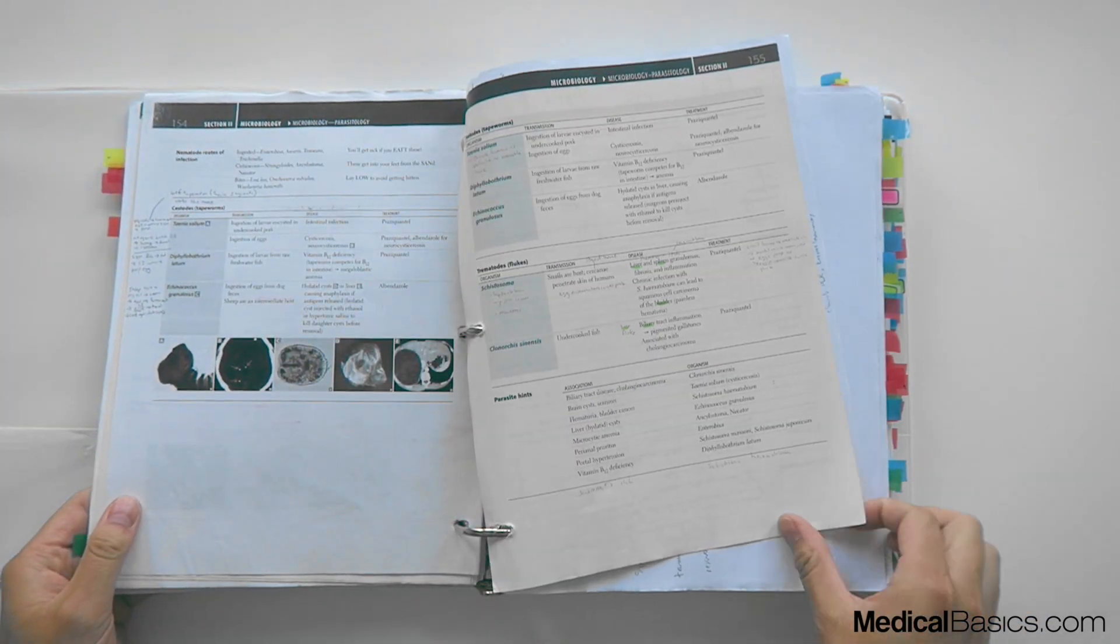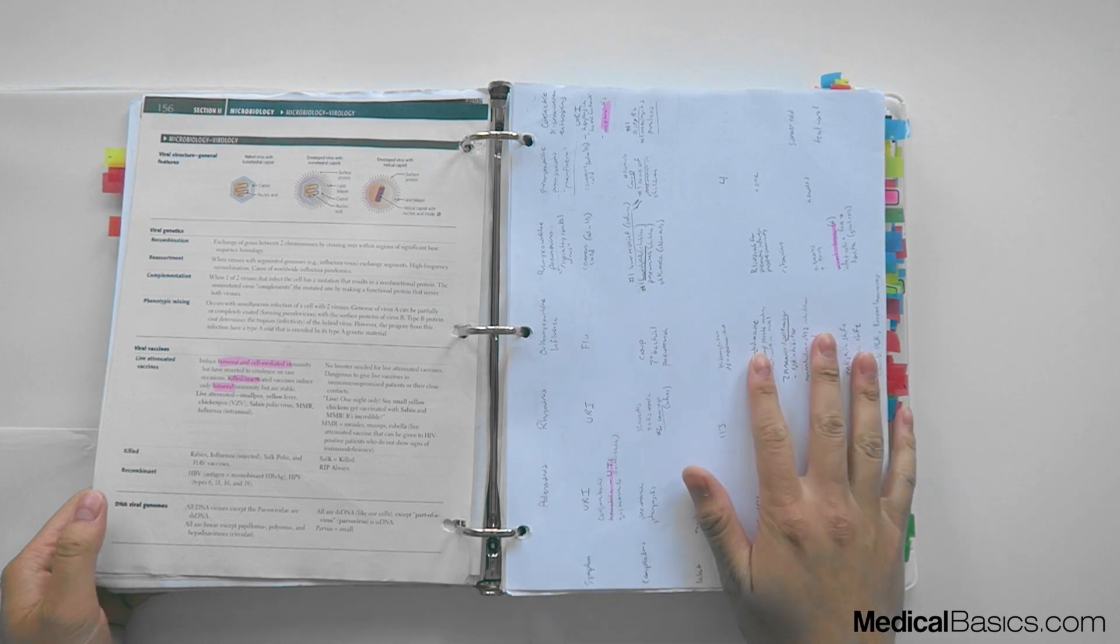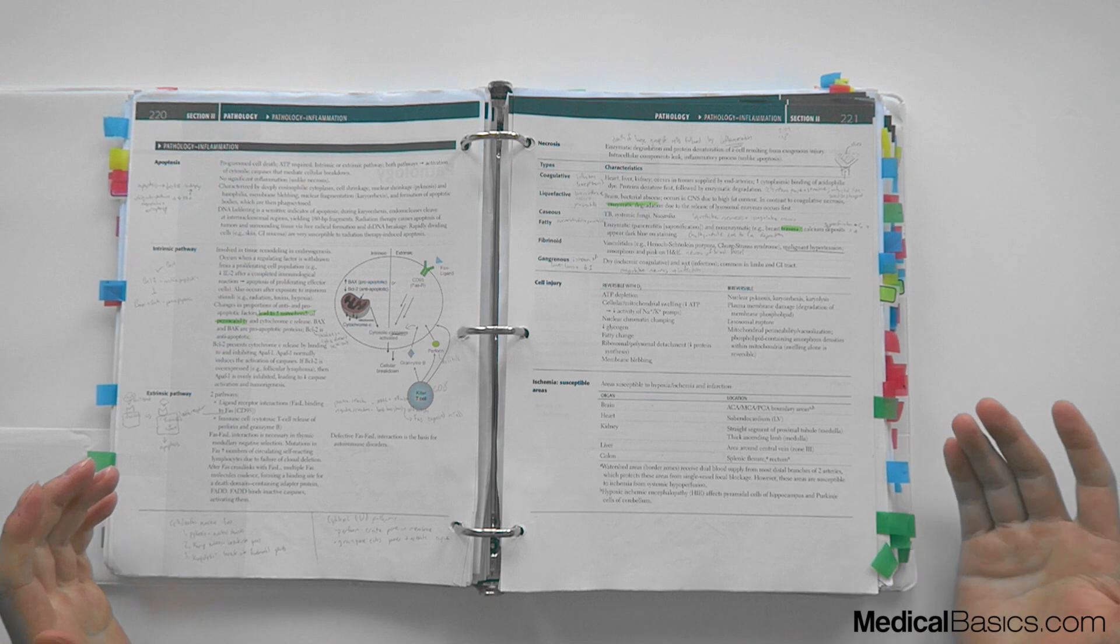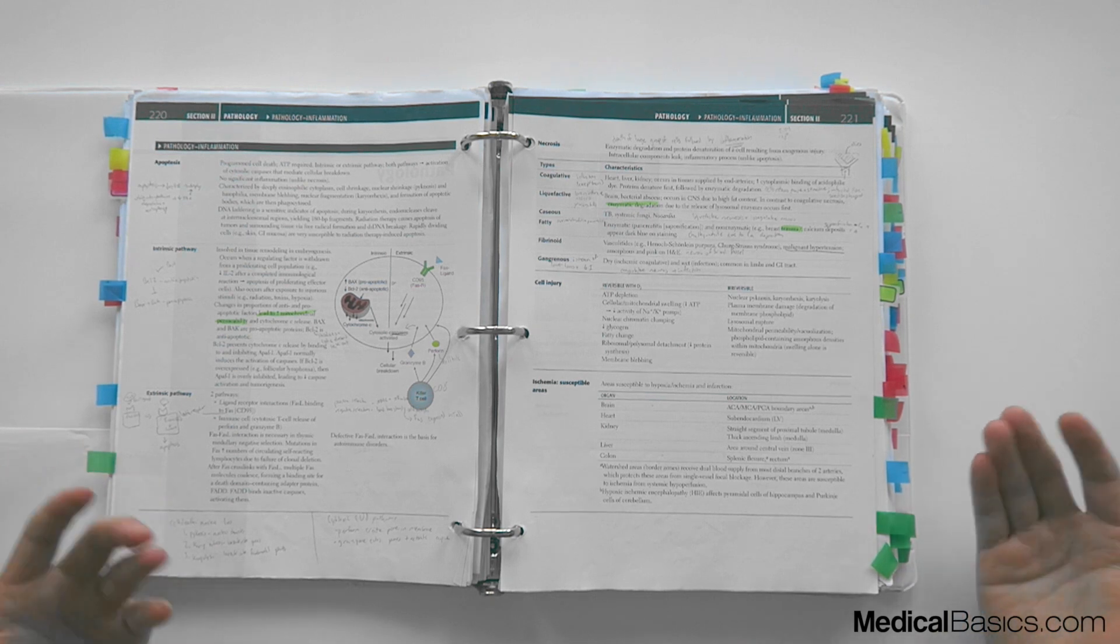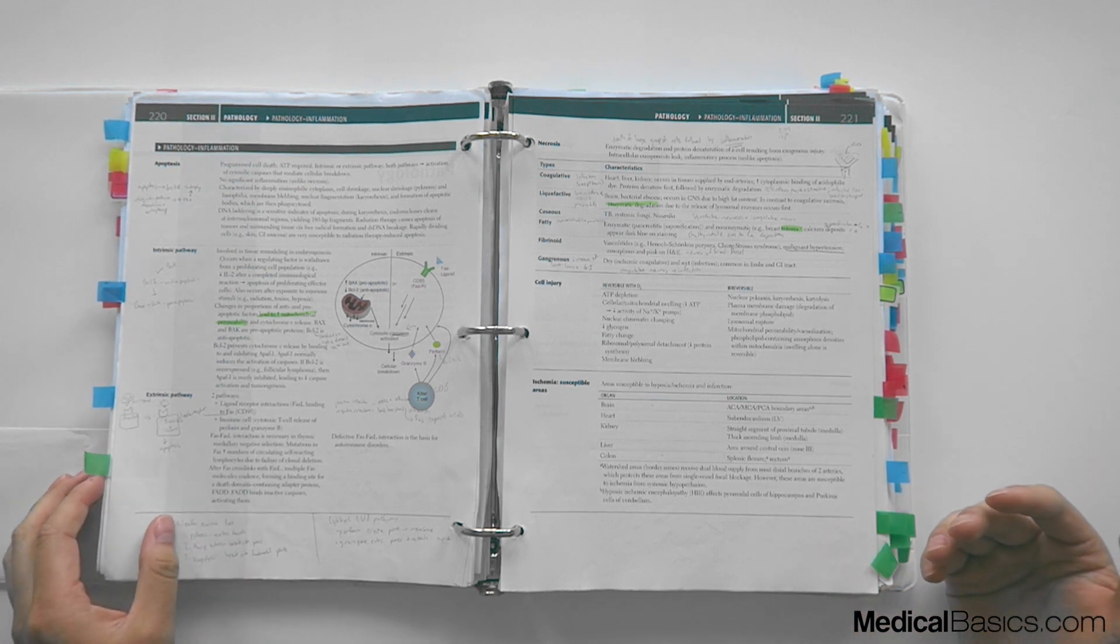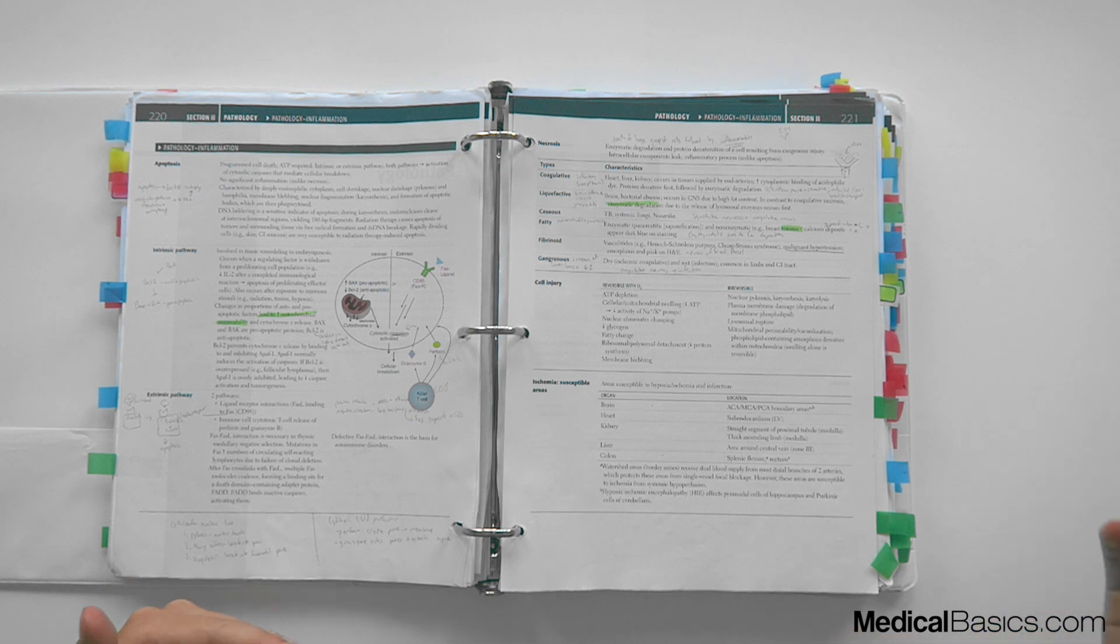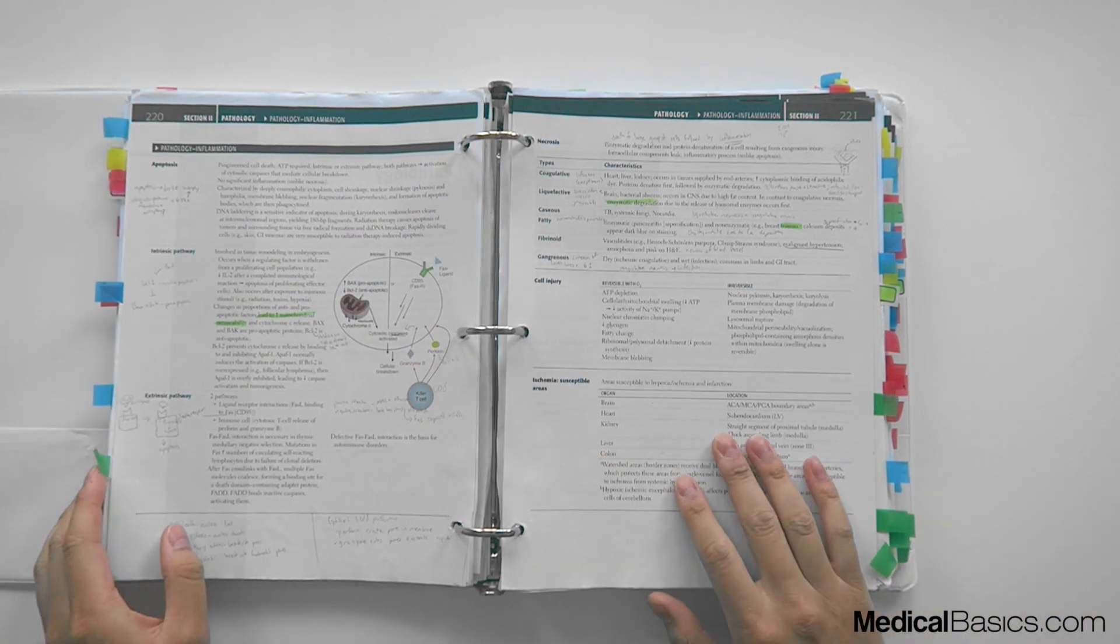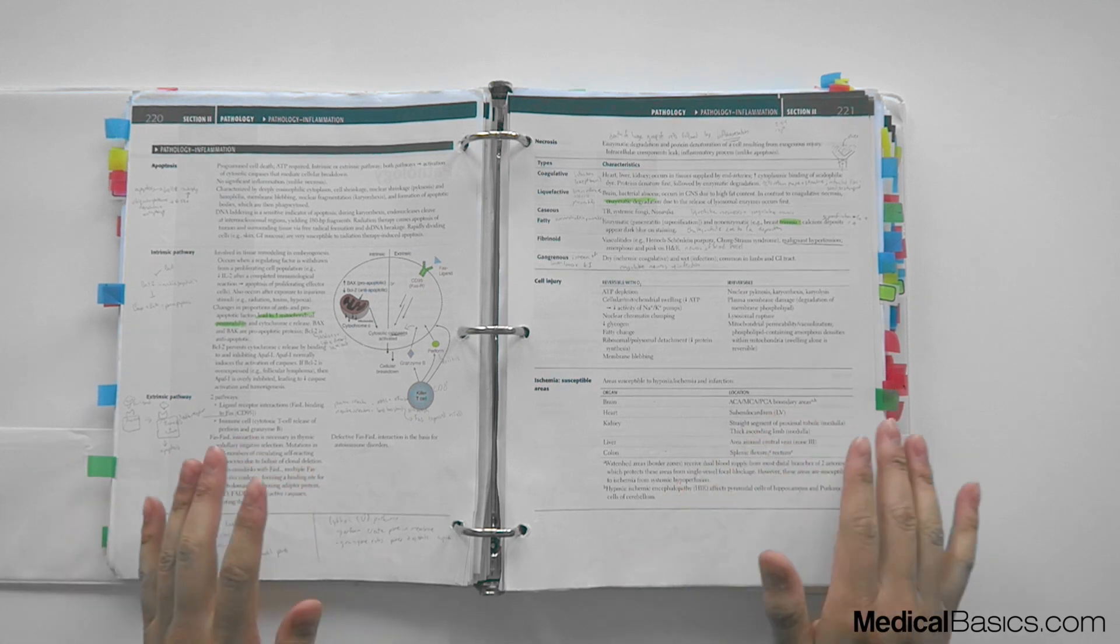So I had other notes whether they were from other textbooks or from other resources that I thought were very useful. Specifically they were generally tables or approaches to different things and I was able to put them in. If there's a certain handout that I liked from school I could put that into Step 1.